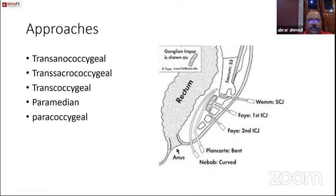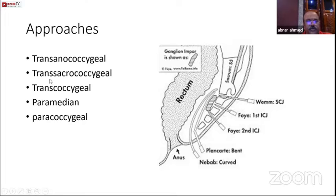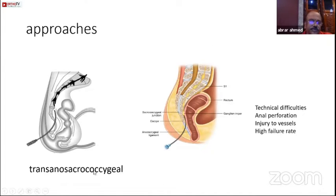There are various approaches which have been described. The original approach was trans-anococcygeal — that is what was originally used — going between the anus and the internal part of the coccyx through the anococcygeal ligament using a bent needle, which was later modified to a curved needle. The problem with this technique was that you had to keep a finger inside the rectum to check for needle perforation, done in the lateral position. It was uncomfortable and there were chances of needle breakage and rectal perforation, as well as anal perforation and injury to vessels, with a high failure rate.